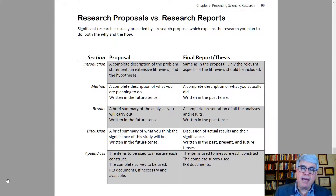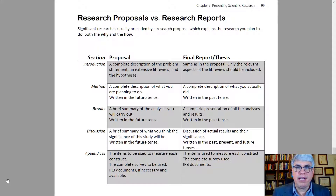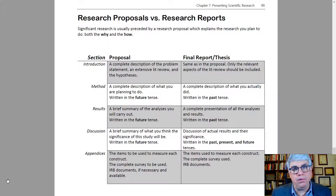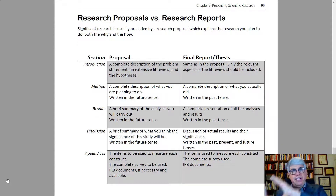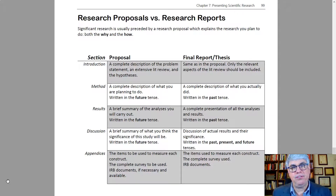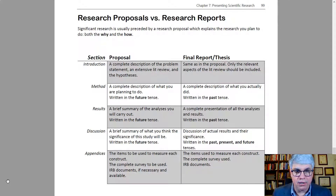You have to basically demonstrate in the research proposal that you're going to perform credible research — research that has value and is likely to yield useful results. So the research proposal says what you're going to do, whereas the final research report, thesis, or dissertation actually says what you did and what the findings of the research are.